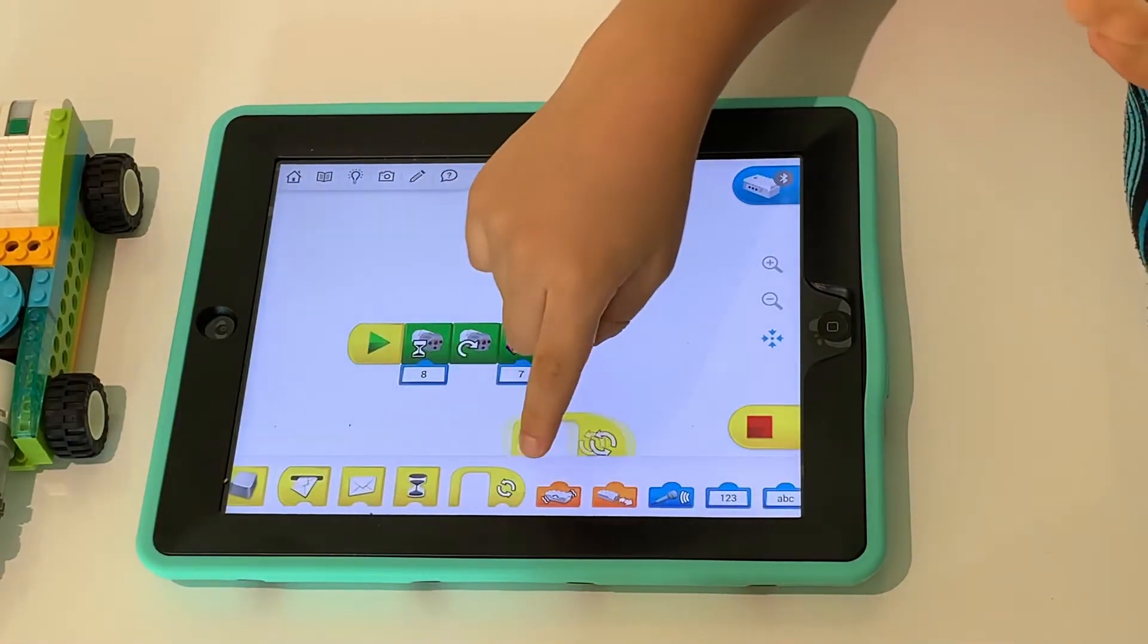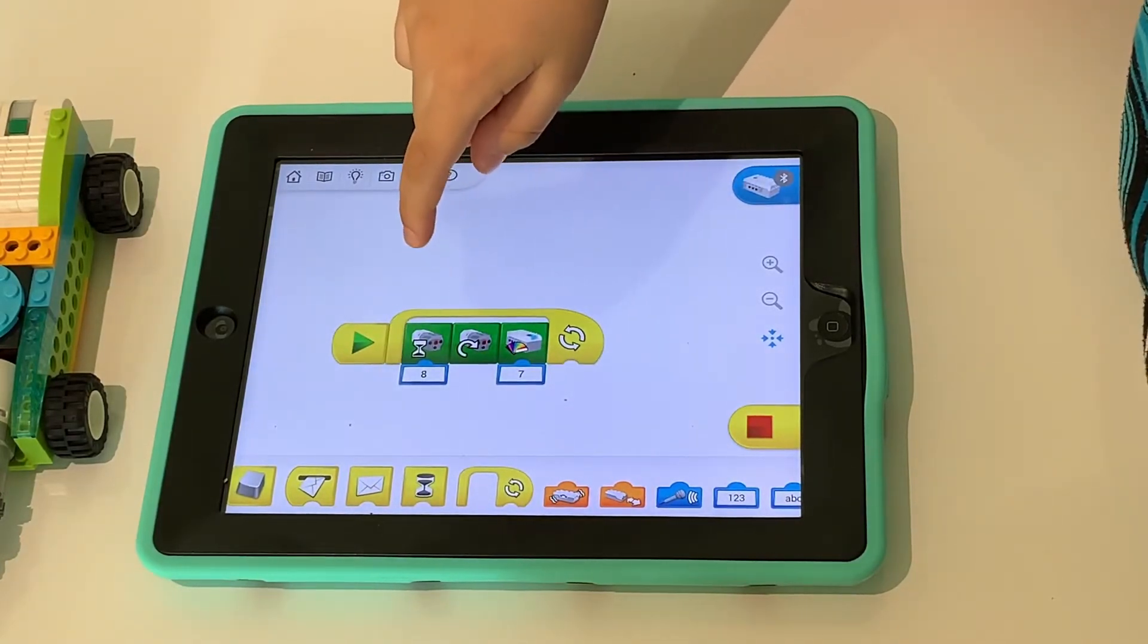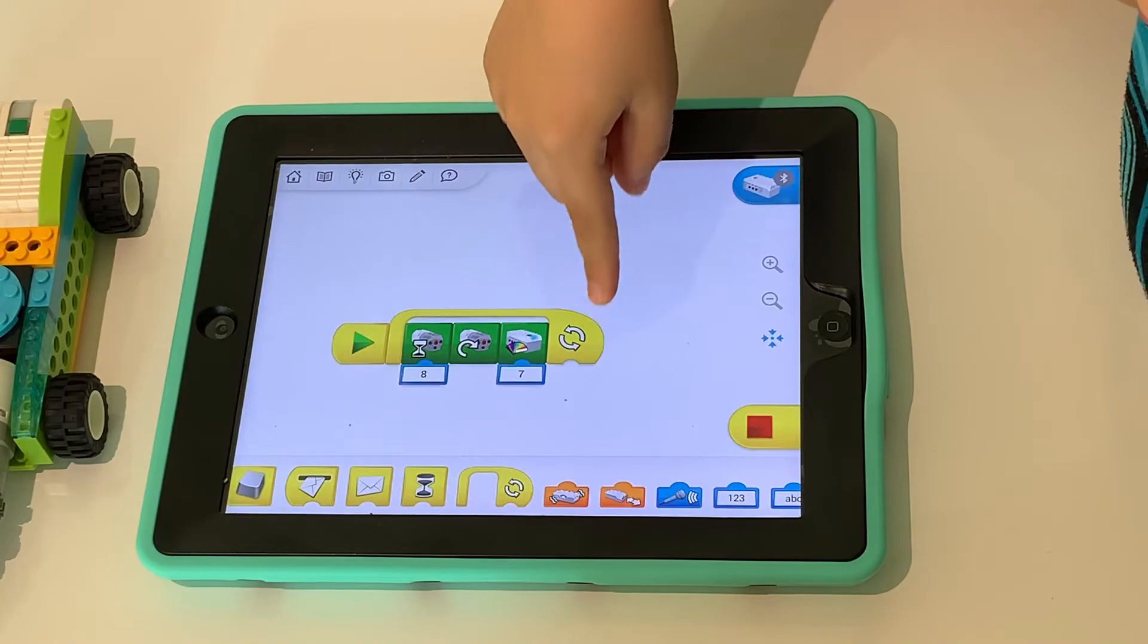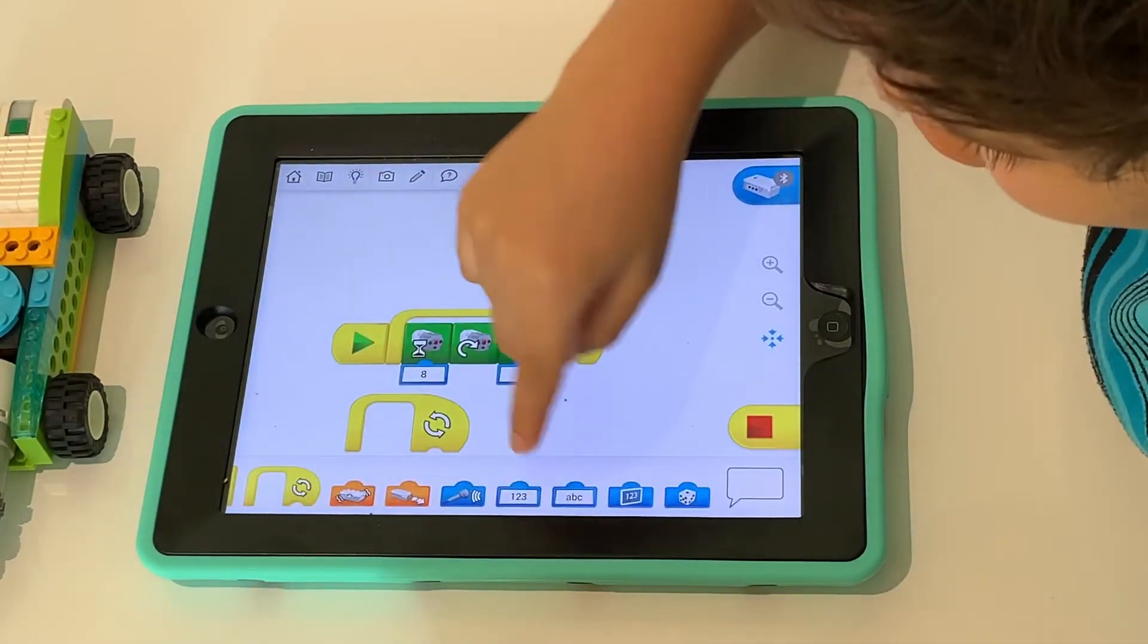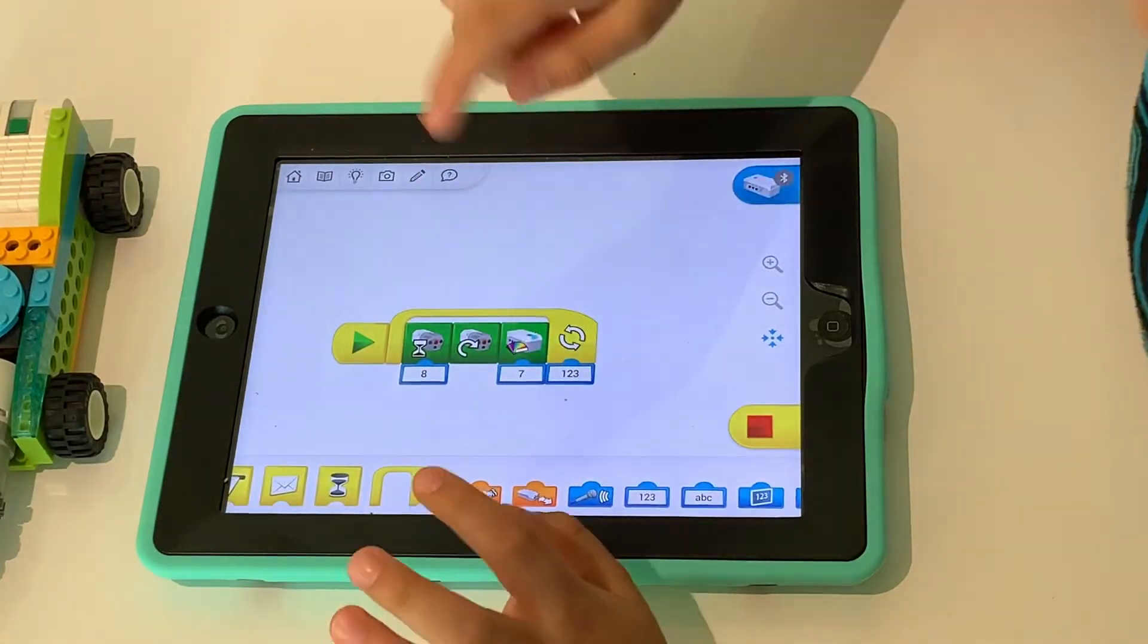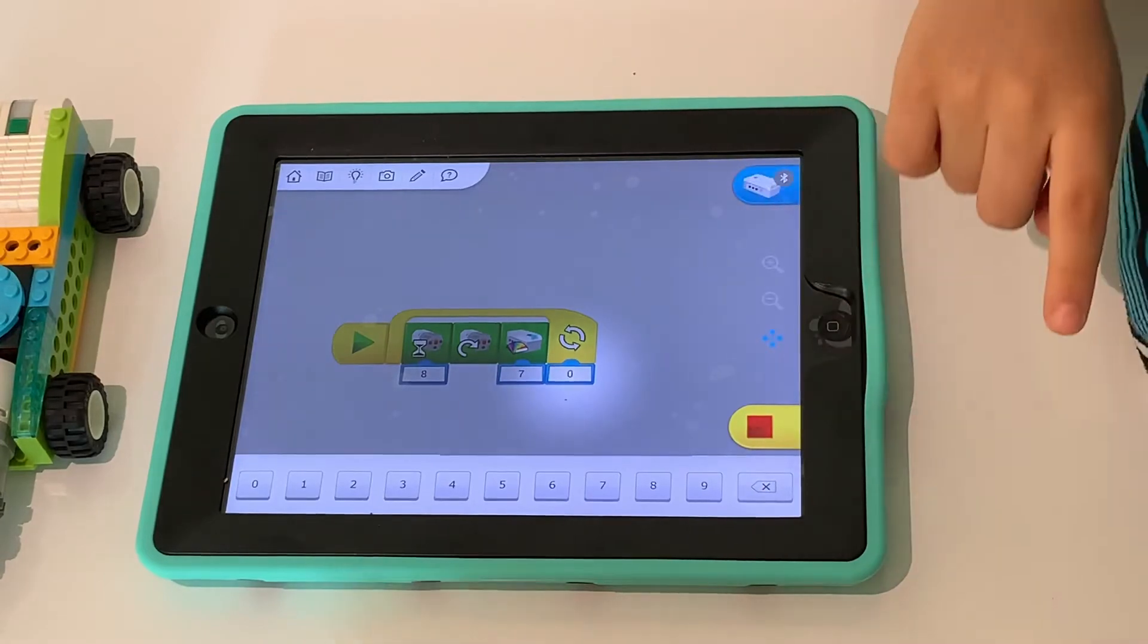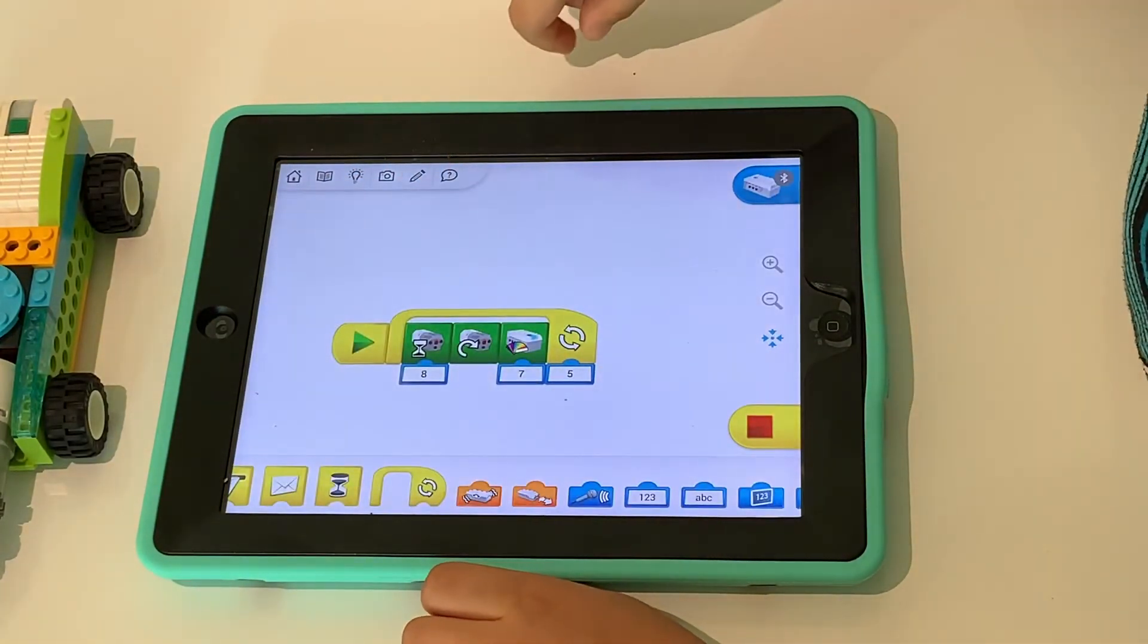And now, we're going to do a loop, which will keep it going and going. But, we can't just make it go forever. That won't work. So, you can put how many times you want it to go. I'm going to go for five.